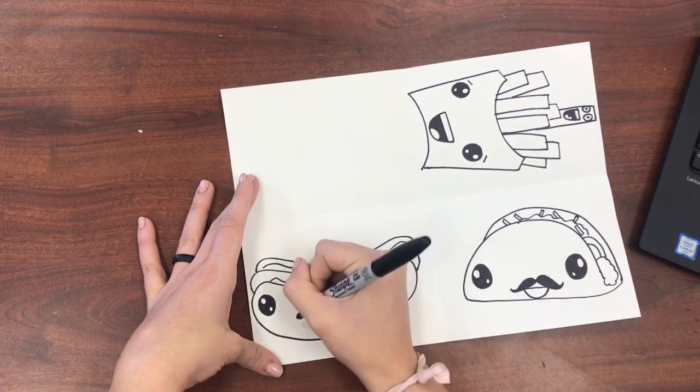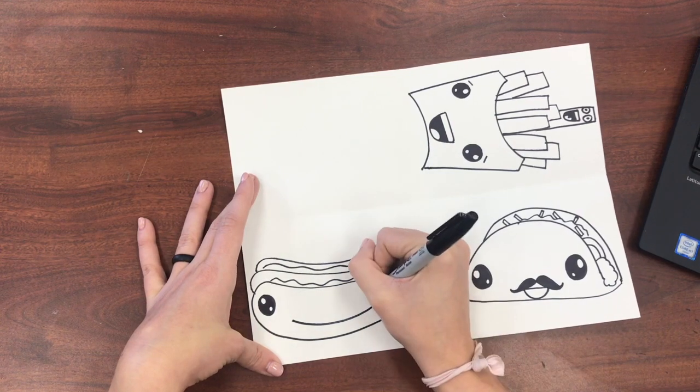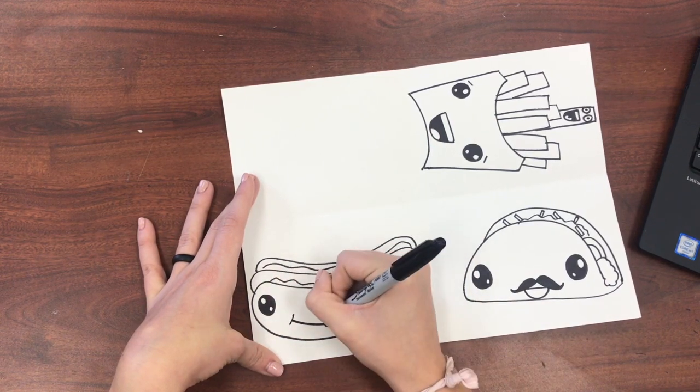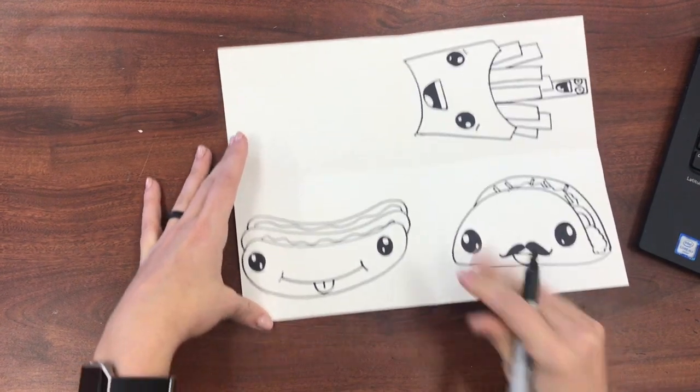Now I'm going to draw my mouth and I think I want it to be a long arch across. You can draw yours however you want because it's your drawing. I think I'll add a tongue. And voila, I'm complete.